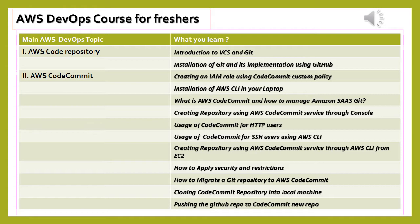AWS Code Commit is a DevOps process to manage code repositories in the cloud. Creating an IAM role using a Code Commit custom policy: in AWS, to use any services you need to have IAM roles. Through this you will have access to the selected service. To utilize the AWS custom policy of Code Commit, you will create your own user from the main account, which can then be used to access Code Commit services.